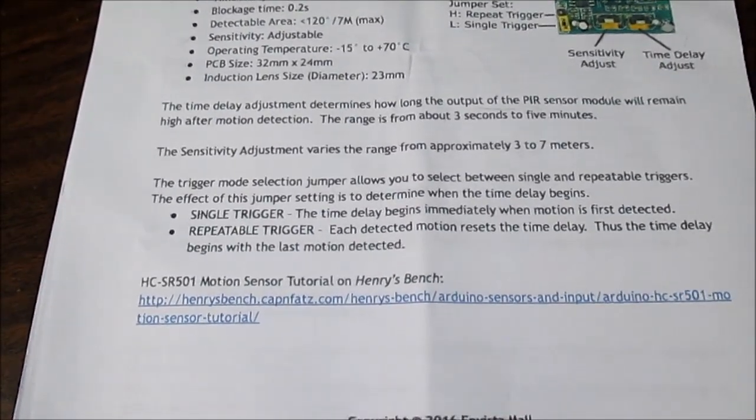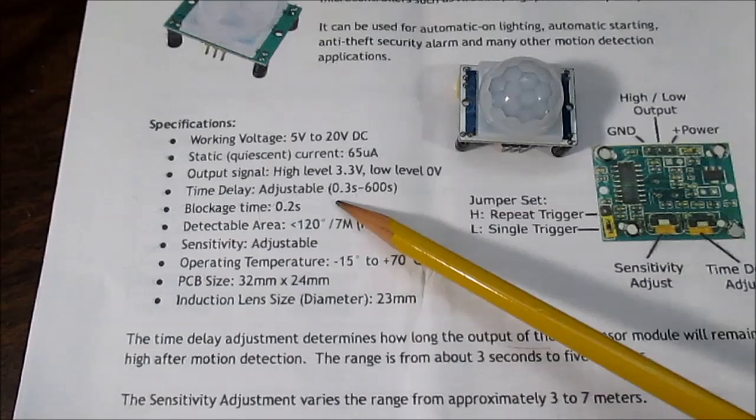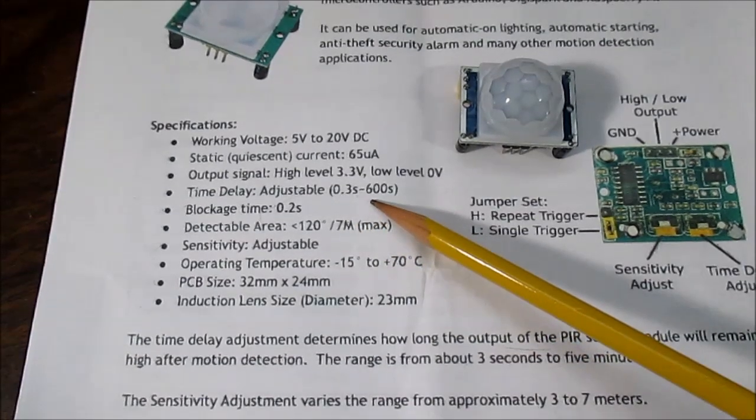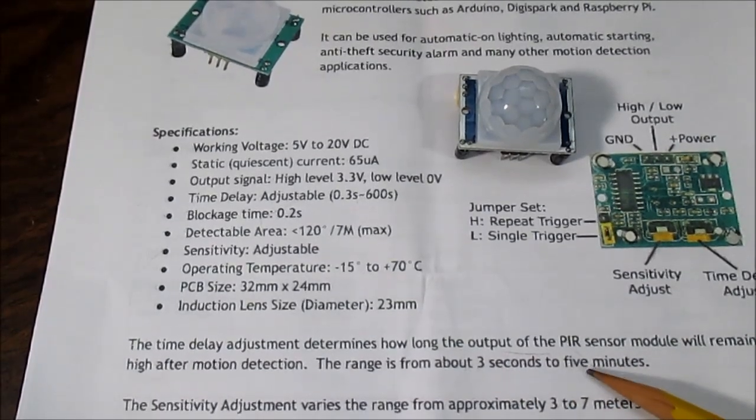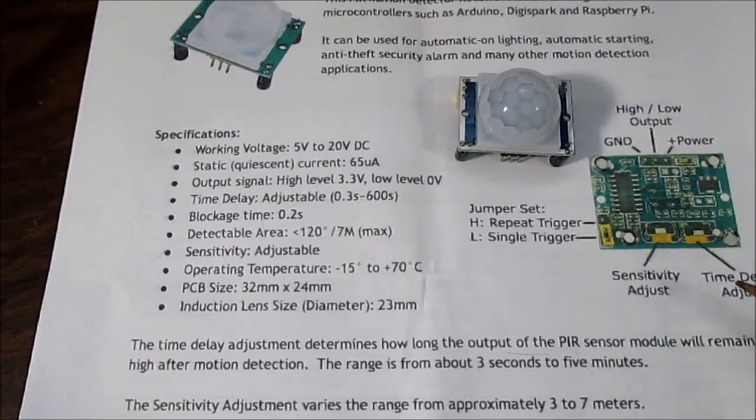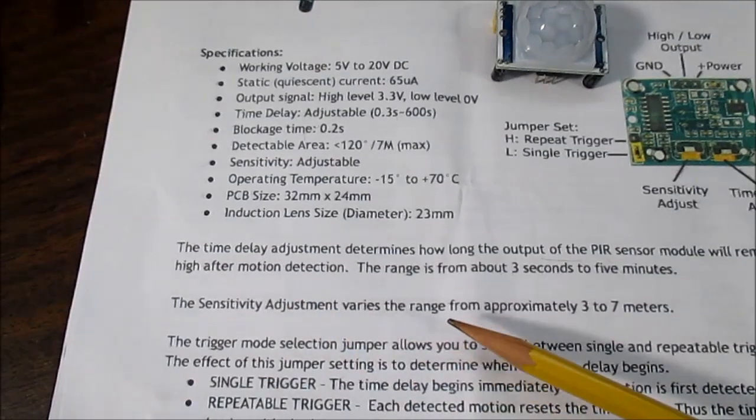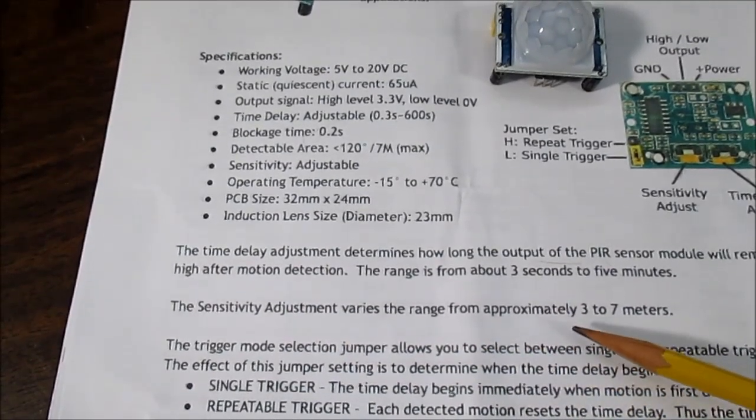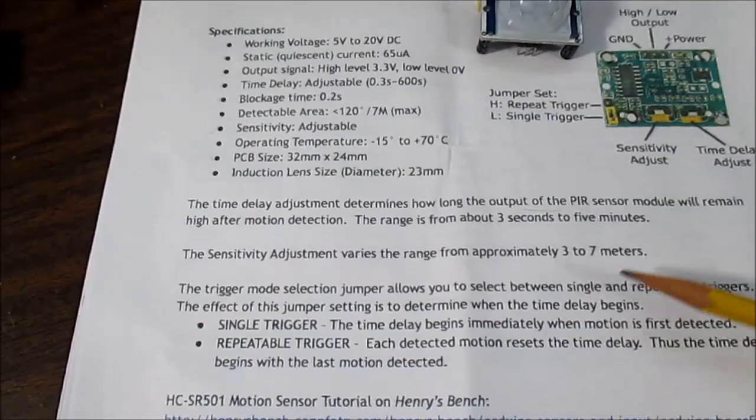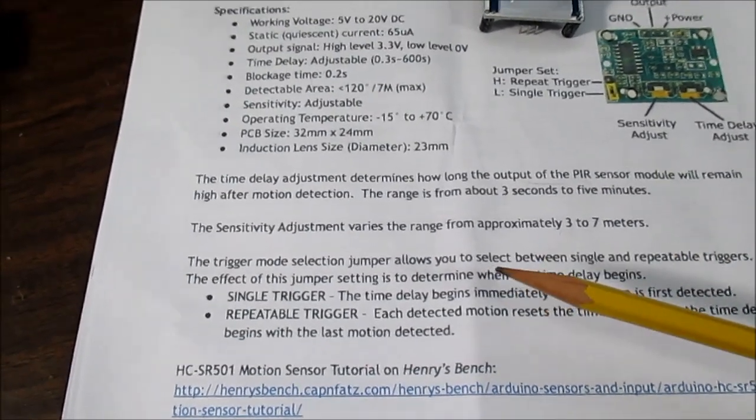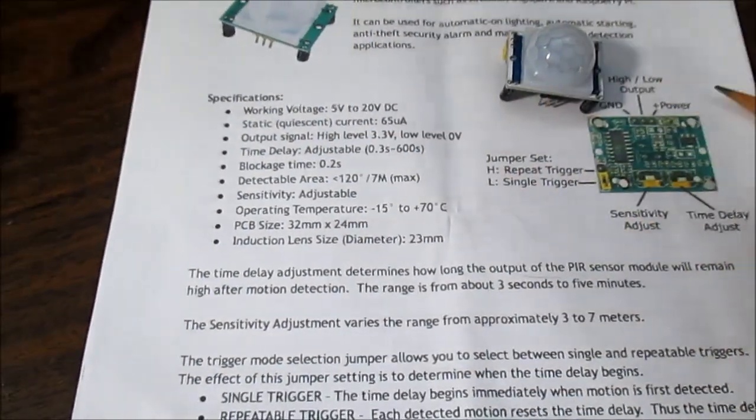Pause if you want to read any more of this stuff. The delay time says 0.3 seconds to 600 seconds. But down here, it says 3 to 5 minutes. 5 minutes would be 300 seconds. I guess I'd have to see which one is right. I'm mainly after a one minute trigger time, so I'm not too concerned. Range is 3 to 7 meters. It also has a trigger mode you can set with the jumper. Right here.